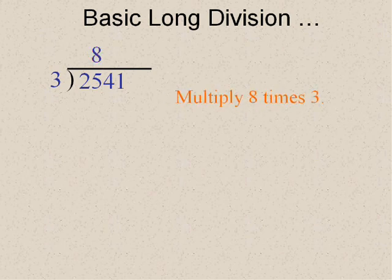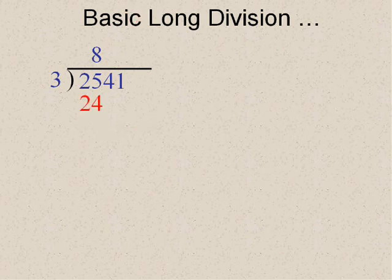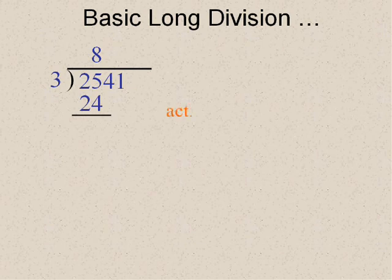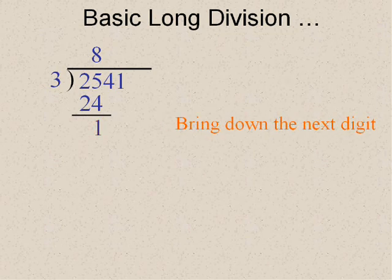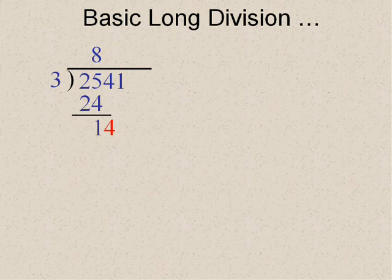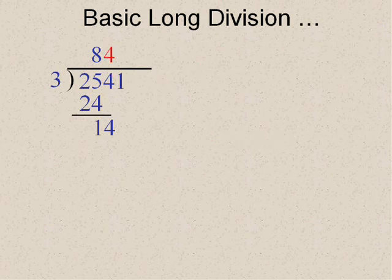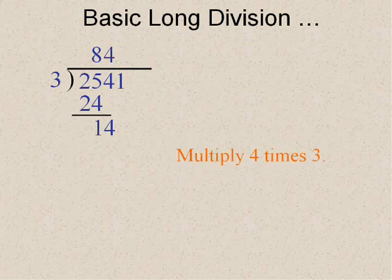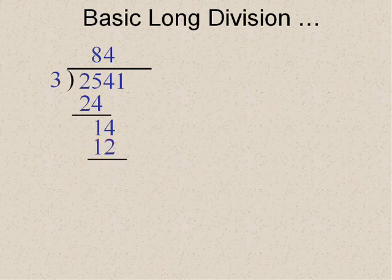Then what did I do? I multiplied. I multiplied my guess and I got twenty-four. And then I wanted to see how much my guess was off by. So what did I do? I subtracted. And then I continued on making another guess. I brought down the next digit and I said my next guess is how much does three go into fourteen.